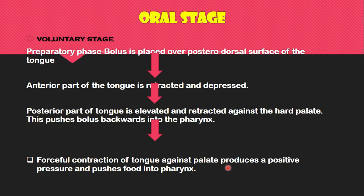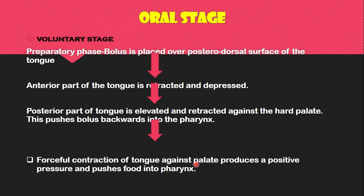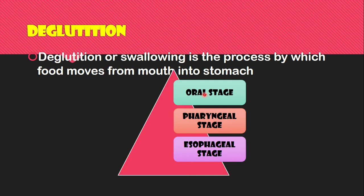We will discuss each of these stages one by one. In brief: in the oral stage, food passes from the mouth to the pharynx; in the pharyngeal stage, from the pharynx to the esophagus; and in the esophageal stage, from the esophagus to the stomach. The oral stage is a voluntary stage.